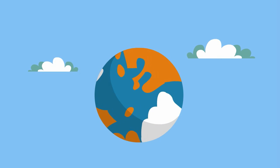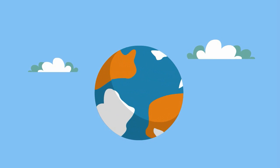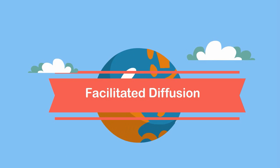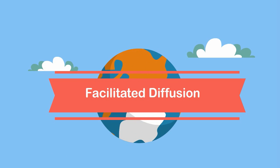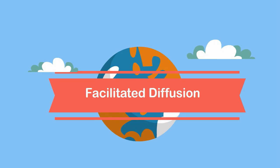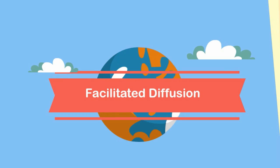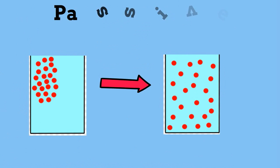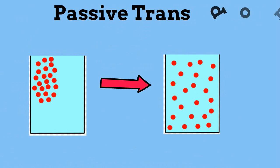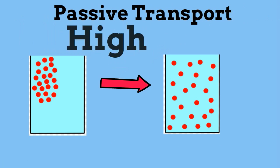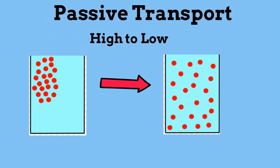Welcome to MooMooMath and Science. In this video I would like to talk about facilitated diffusion. Facilitated diffusion is a type of passive transport. Passive transport is when items move from a high concentration to a low concentration. This is described as going down the concentration gradient.